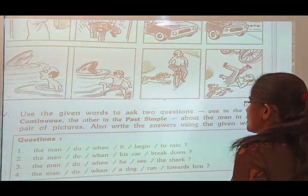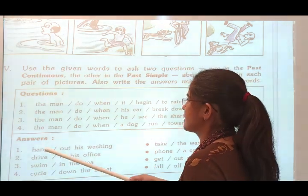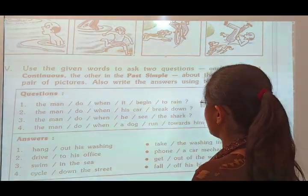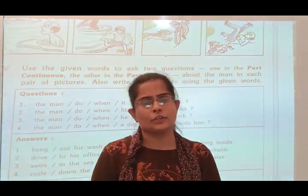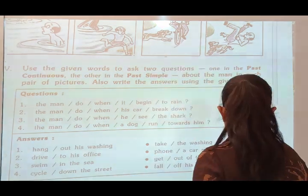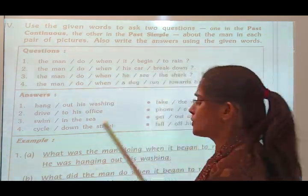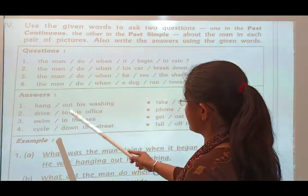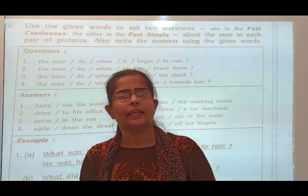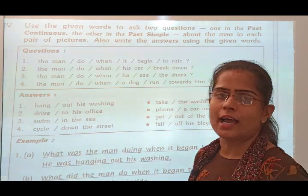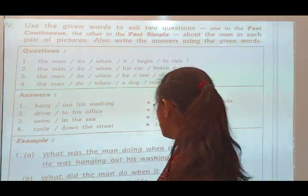Here are some pictures. According to the pictures, complete the sentences making questions with two answers — one in past continuous tense and one in simple past tense. First question: 'What was the man doing when it began to rain?' Answer in past continuous: 'He was hanging out his washing.' Then in simple past: 'What did the man do when it began to rain? He took the washing inside.'